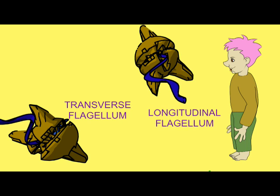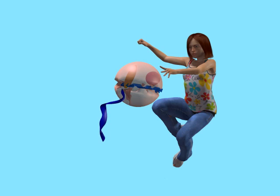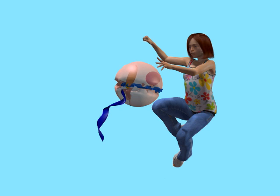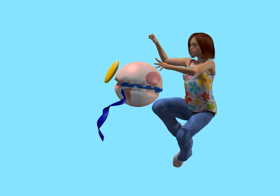The other, in contrast, runs through the sulcus and acts as a rudder. The chloroplasts of dinoflagellates possess Chlorophyll A and Chlorophyll C2.